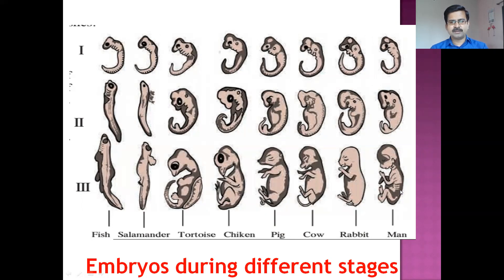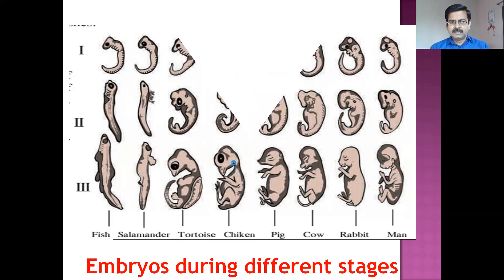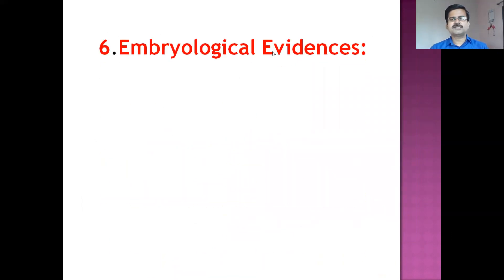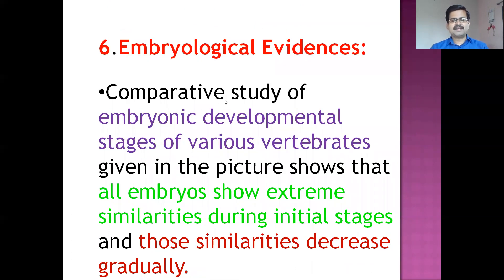In the early stage there is a similarity. So we have to see this sixth evidence, that is the embryological evidence. The comparative study of embryonic developmental stages of various vertebrates given in the picture will show that all embryos show extreme similarities during the initial stages.